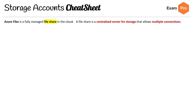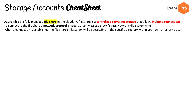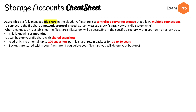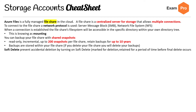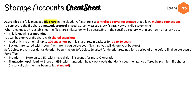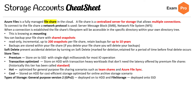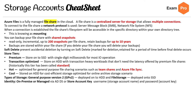On the third page — Azure Files is a fully managed file share in the cloud. A file share is a centralized server for storage that allows multiple connections. The network protocols used are either SMB or NFS. When a connection is established, the file share's file system will be accessible in a specific directory within your own directory tree — this is known as mounting. You can back up your file shares with shared snapshots: read-only, incremental, up to 200 snapshots per file share, retained for up to 10 years; backups are stored within the file share, so if you delete your file share you delete your backups. Soft deletes prevent accidental deletion — when enabled, a blob is marked for deletion and retained for a period before being deleted. For store tiers, you have premium, transaction optimized, hot, and cool. For identity, you can use on-premises or managed via Azure Active Directory Domain Services (AADDS), or using a storage account key — the username being the storage account name and the password being the account key.